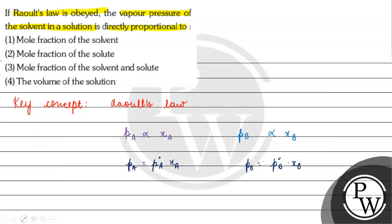Coming back to the question, the correct answer for this question will be option 1 — mole fraction of the solvent. The vapor pressure of the solvent in the solution will basically be directly proportional to the mole fraction of the solvent. I hope you understood it well, thank you and all the best!